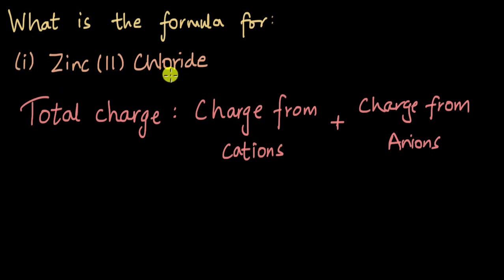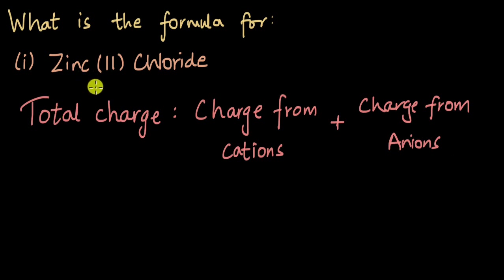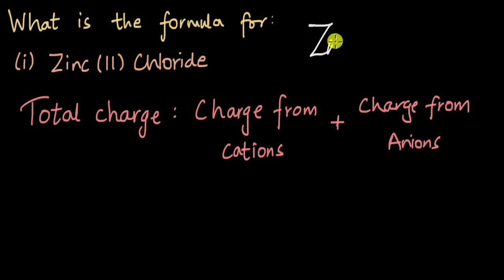In zinc chloride, zinc would be the cation because it's the metal, and chloride would be the anion because it's a non-metal. If we think about the charge that the zinc cation has, we can have a look at the Roman numerals written inside the brackets — this is two — so the zinc ion is Zn²⁺.